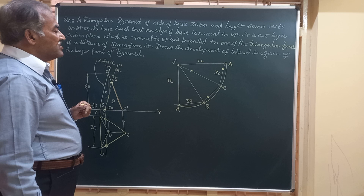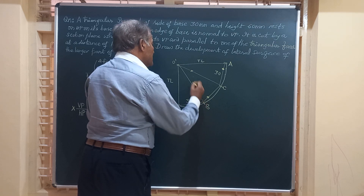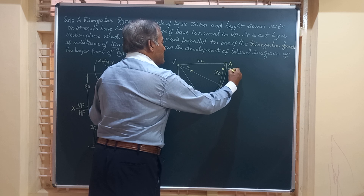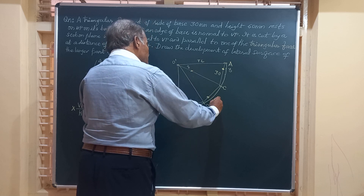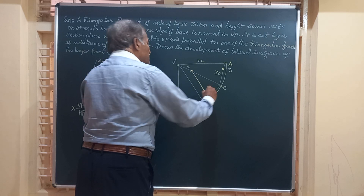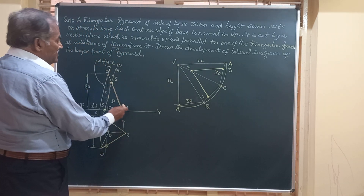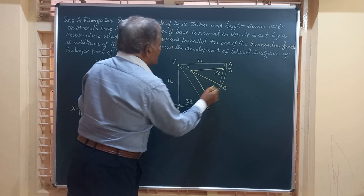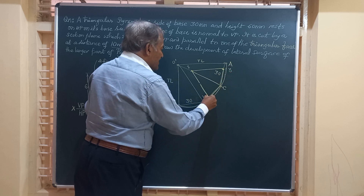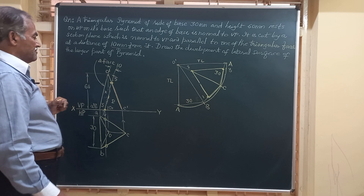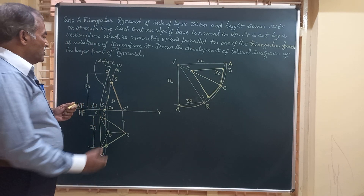Now let us number these cut points. We call the point on OC as point 1, the point on AC as point 3, and the point on BC as point 2 — giving us three points total. Join point 1 to point 2, and point 2 to point 3. On OC, the retained portion from O to point 1 is shown dark, and the portion from point 3 to C on the base is also shown dark. The portion shown here represents the development of part P.